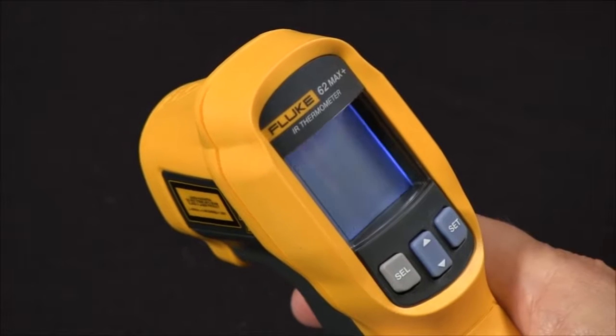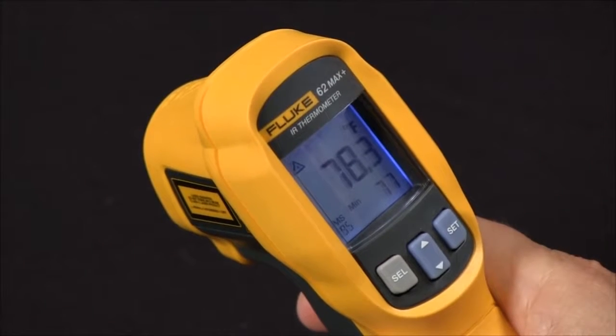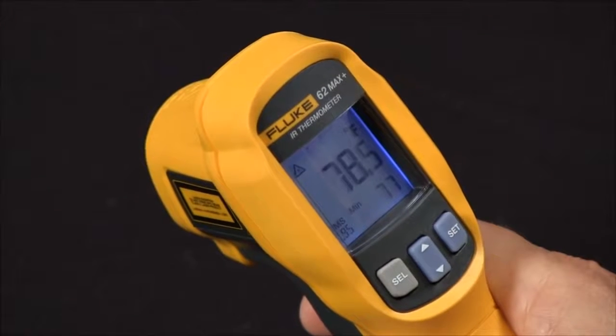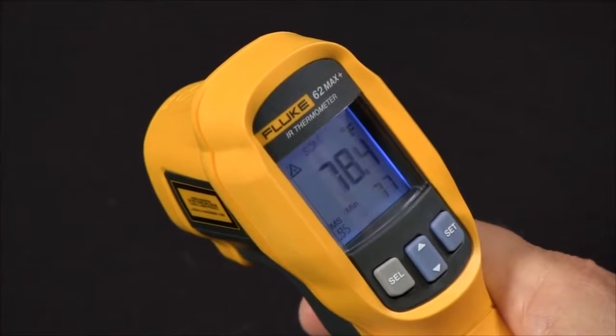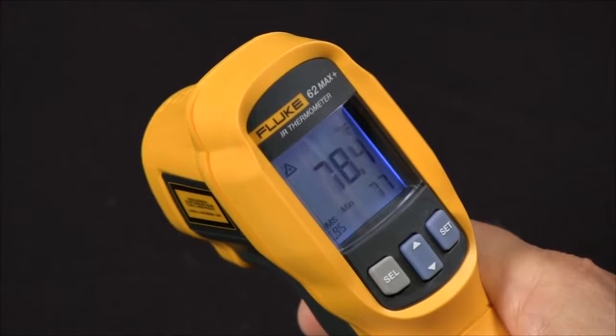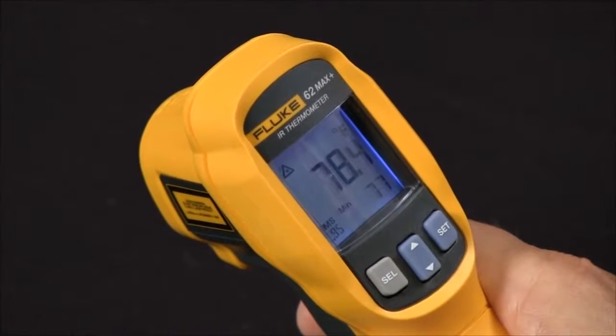The Fluke 62 Max and the 62 Max Plus are handheld IR thermometers. The 62 Max has a distance to spot ratio of 10 to 1 and the 62 Max Plus has a distance to spot ratio of 12 to 1.